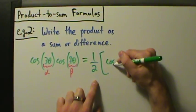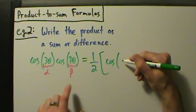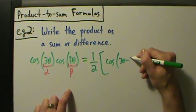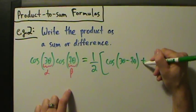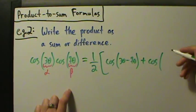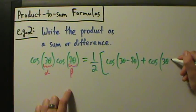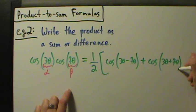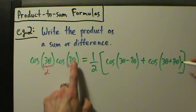cosine of α minus β, so that's 3θ minus 7θ, and then plus cosine of α plus β, which is 3θ plus 7θ. Because again, α is 3θ and β is 7θ.